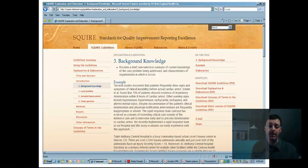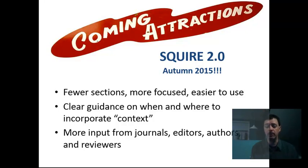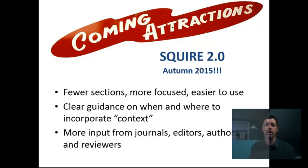We recognize that there are probably better examples for many of these items currently available in the literature. As you explore SQUIRE 1.0 on the website, be aware that SQUIRE 2.0 will be available in autumn of 2015. We've been working on this for several years, incorporating understanding of what worked well about SQUIRE 1.0 and what worked less well. There will be fewer sections, more focus, making it easier to use, with clearer guidance on incorporating context. We've also received copious input from journals, editors, authors, and reviewers during this revision process.